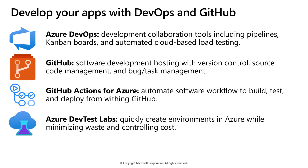Azure includes a number of DevSecOps solutions as well. Azure DevOps Services provides development collaboration tools including pipelines, Git repositories, Kanban boards, and extensive automated and cloud-based load testing. Azure DevTest Labs allows you to quickly create environments in Azure while minimizing waste and controlling costs. GitHub provides hosting for software development and version control using Git. It offers distributed version control and source code management SCM functionality of Git, plus its own features.